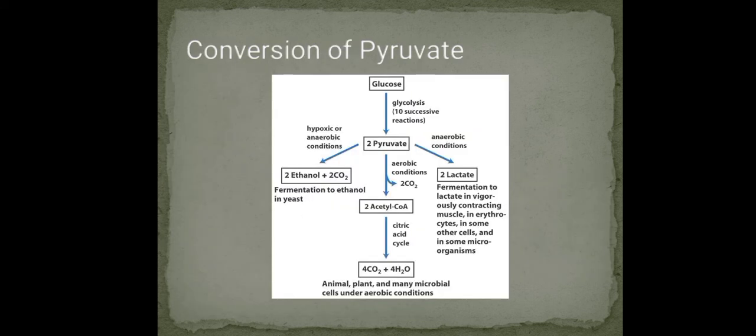Conversion of pyruvate. Pyruvate molecules formed during glycolysis can be converted into different products based on the oxygen concentration in the cell.